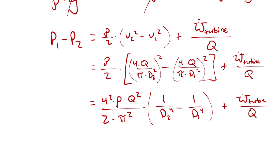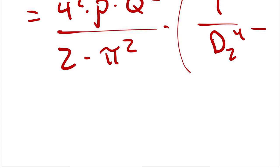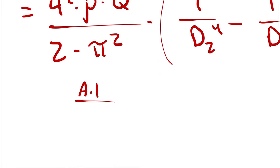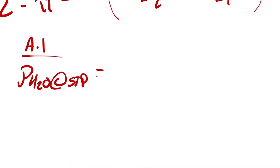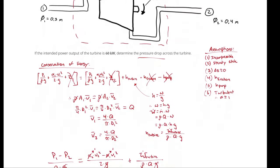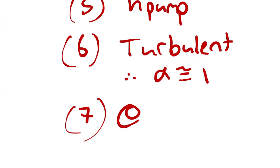Q, diameters, power, and volumetric flow rate are all known quantities. The density is something we can look up, assuming our flow is at standard temperature and pressure. From table A1, the density of water at standard temperature and pressure is 998 kilograms per cubic meter — about one atmosphere and 20 degrees Celsius. It's important that we have that listed as an assumption: standard temperature and pressure.